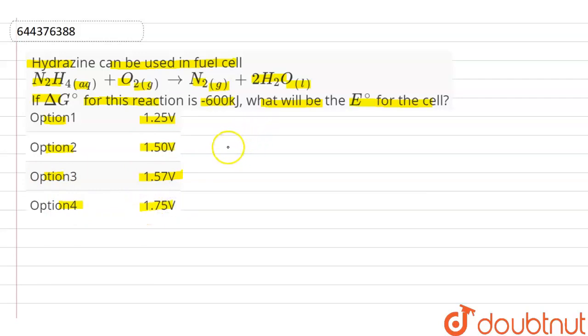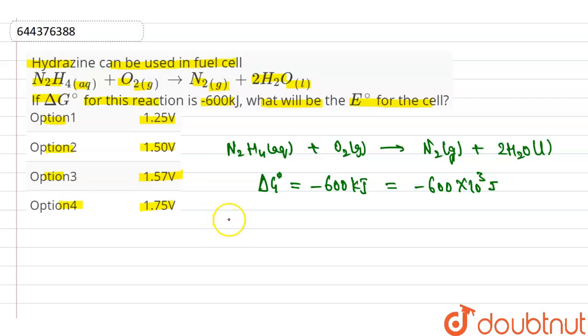In our question, the reaction is N2H4 aqueous plus O2 gaseous converted into N2 gaseous plus 2 moles of H2O liquid. Also given delta G0 is minus 600 kJ, which equals minus 600 times 10 to the power 3 Joules. We know delta G0 equals minus nFE0 cell, where 1 Faraday equals 96500 coulomb.